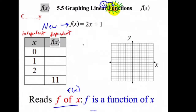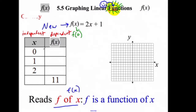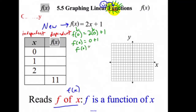So f of x is our new y. How is this going to look? When x is 0, I replace x with 0 in my equation — every single x gets replaced with 0. So I'm saying f of 0 equals 2 times 0 plus 1. That's 0 plus 1, which equals 1. So with the old notation, when x is 0, y is 1. Now I say: f of 0 equals 1.